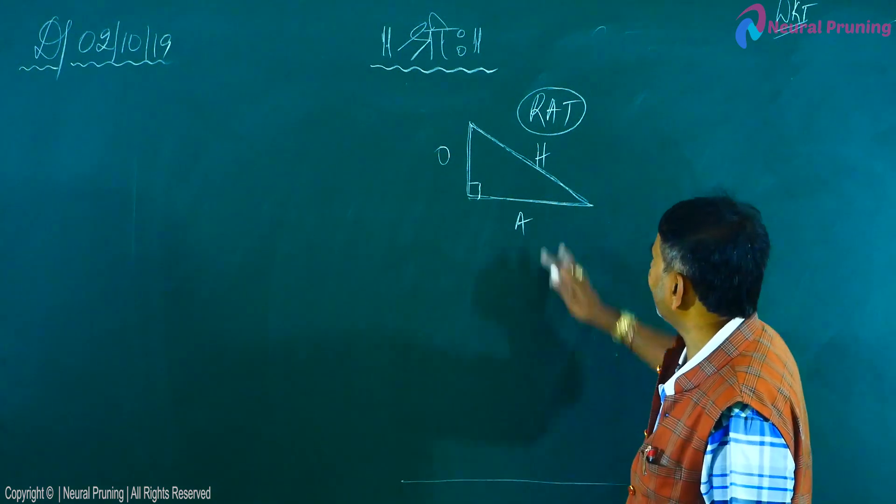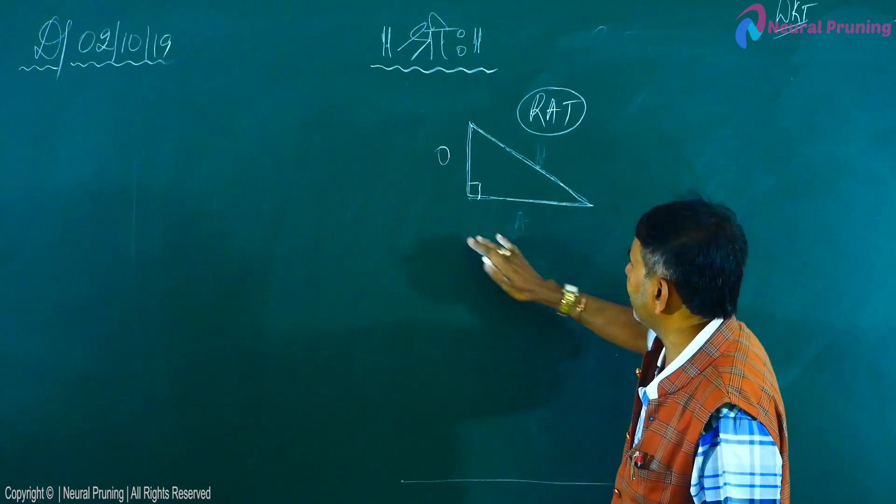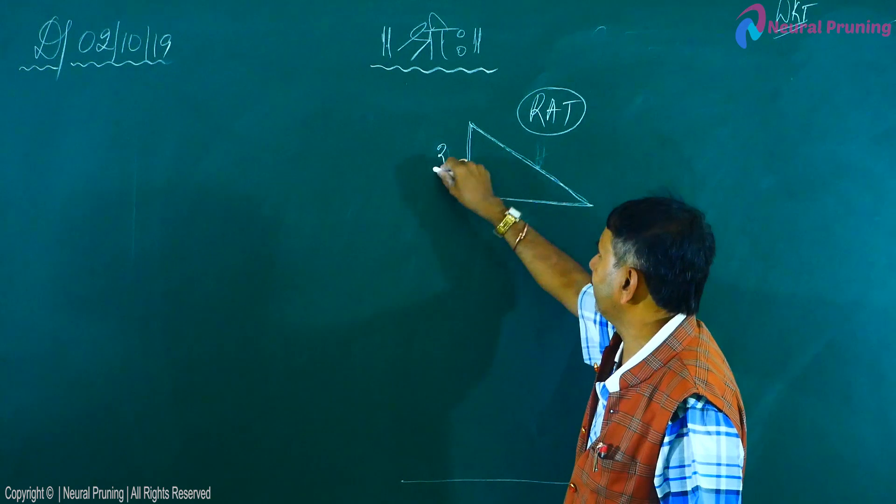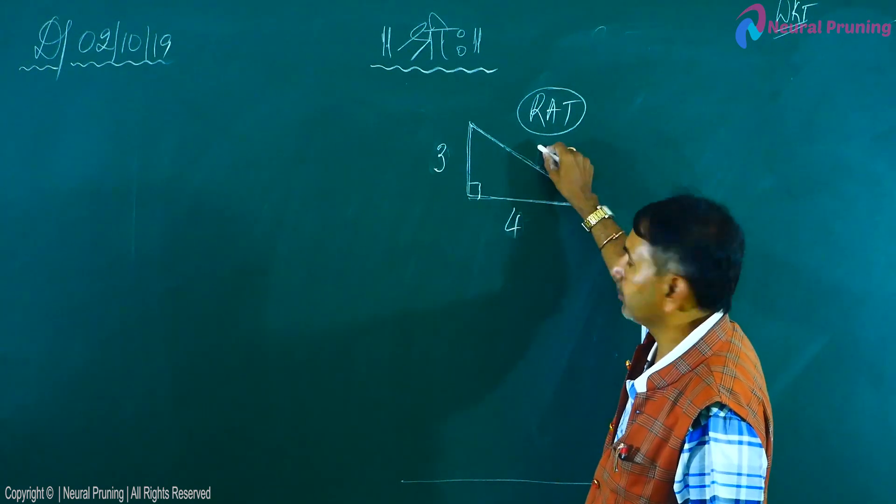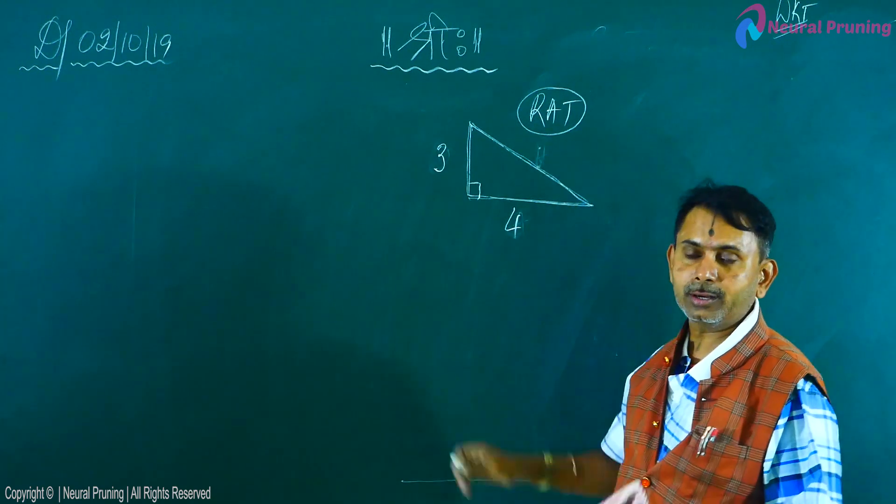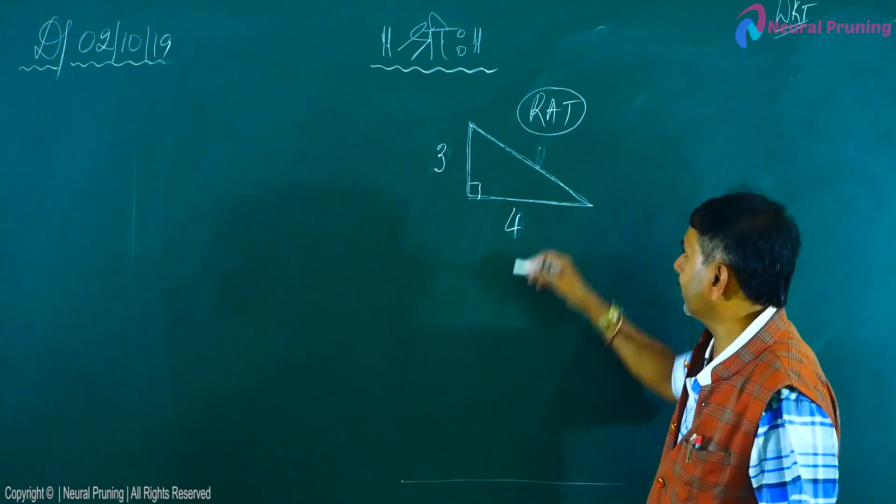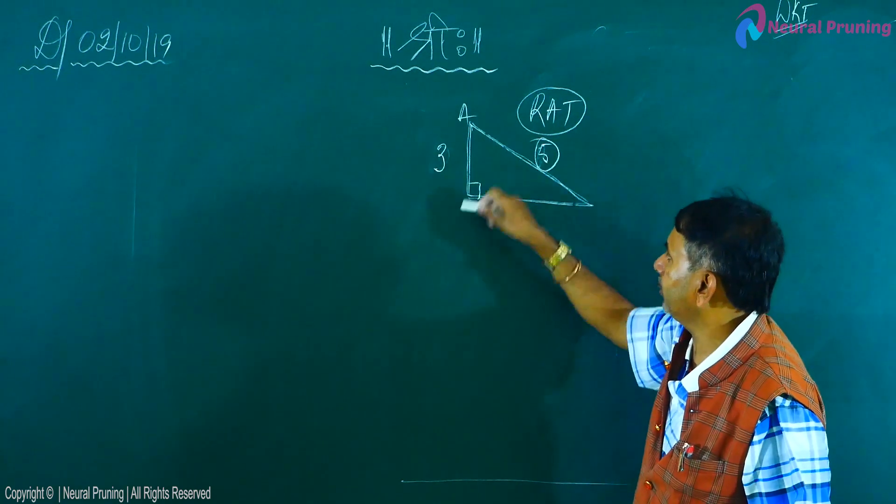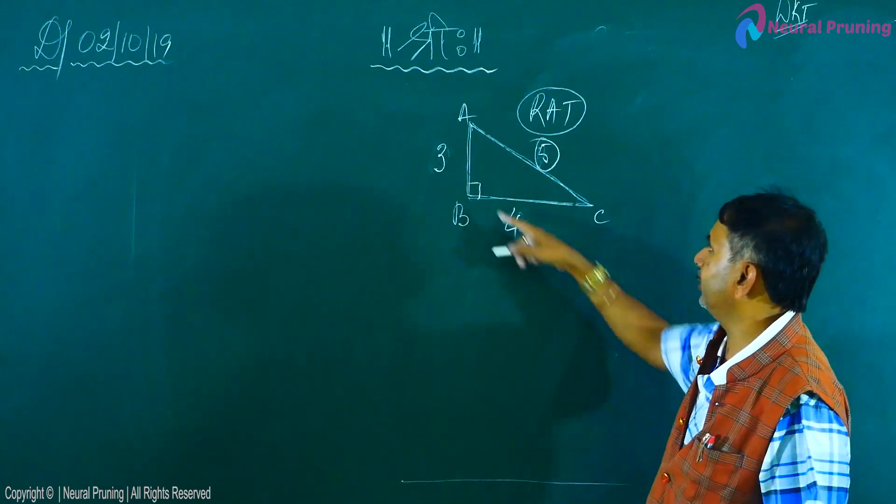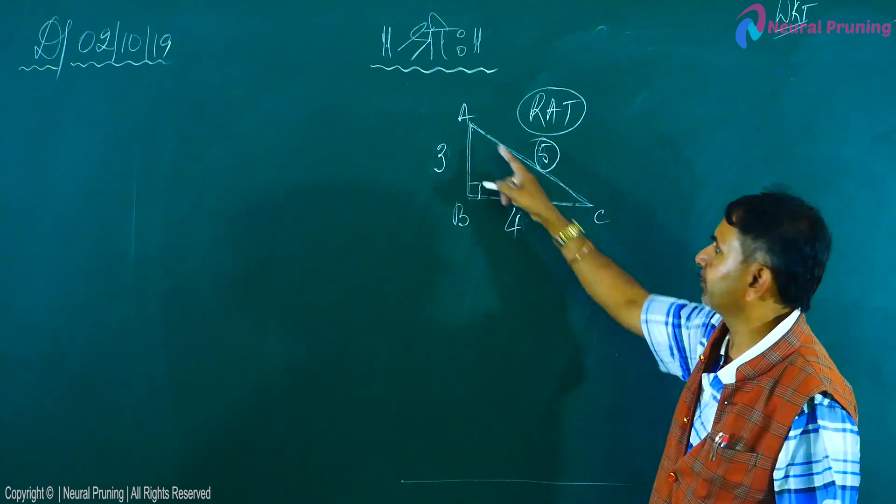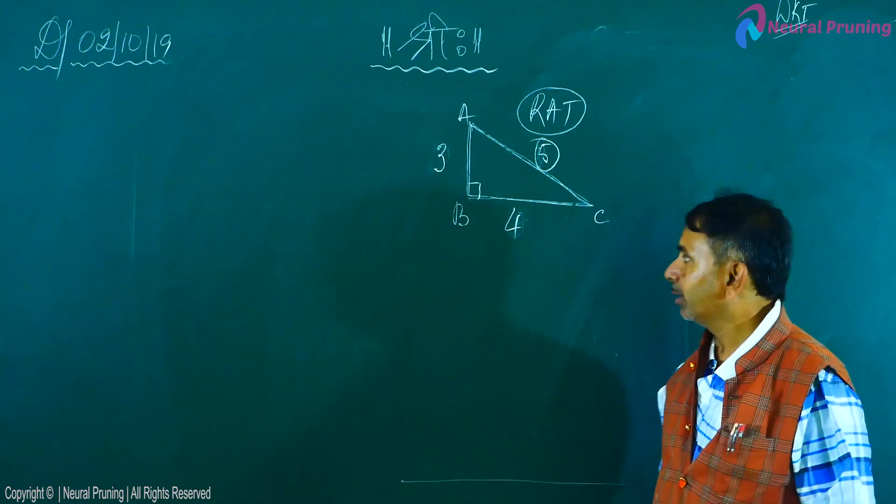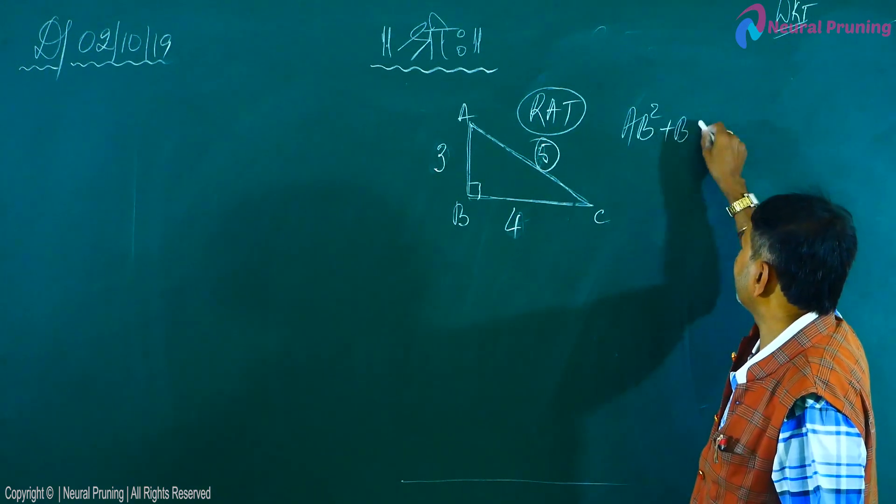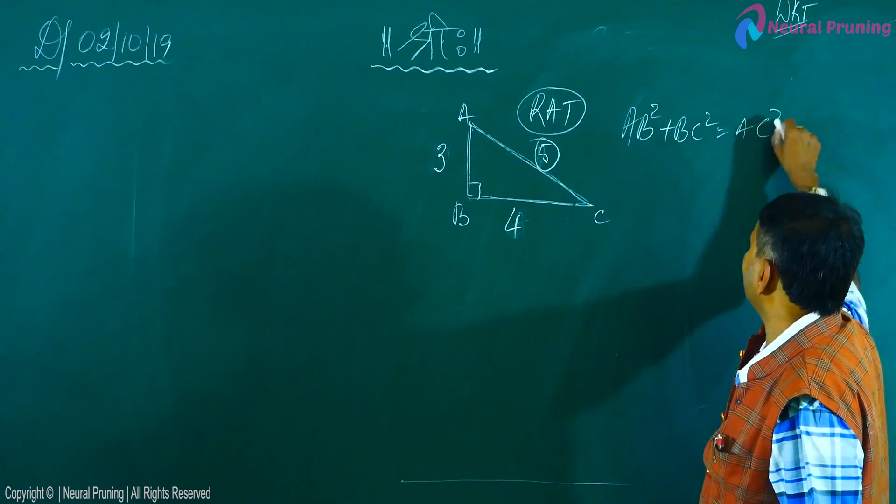Now, today you will be taught Pythagorean triplets generation, how to do it. Suppose, for example, if we have this as three, if this is four, then this will become how much? Conventionally, in all textbooks, we will write this as what? Five. Why? Because three means, suppose if you have this as ABC, AB is three, BC is four, AC is five.